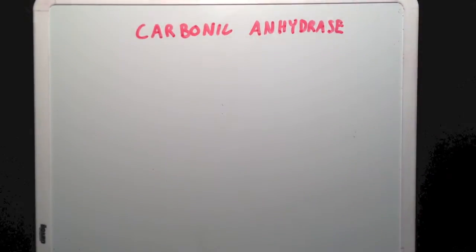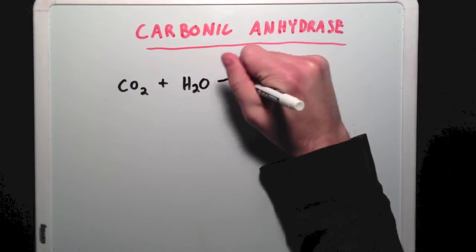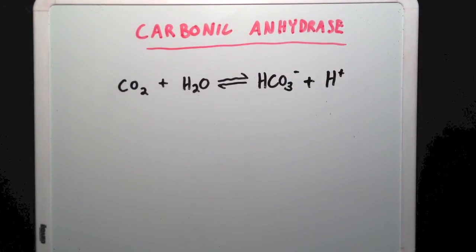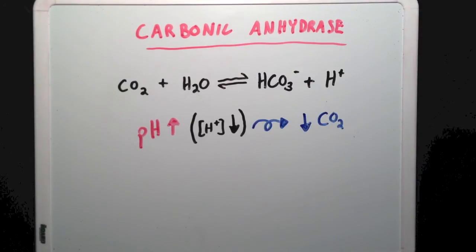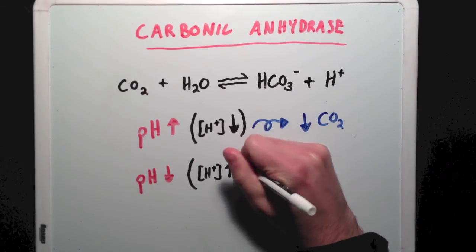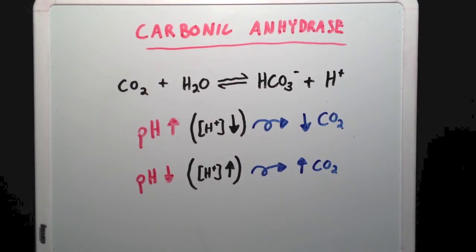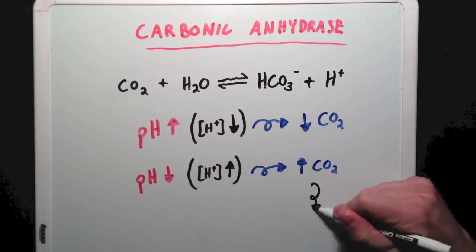Well it turns out human blood has a second buffering system. The enzyme carbonic anhydrase will catalyze a reaction between carbon dioxide and water to form bicarbonate and a free proton. This means when blood pH rises, the amount of available carbon dioxide will decrease. When blood pH decreases, the amount of carbon dioxide produced will increase, which can often lead to hyperventilation.